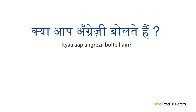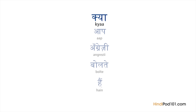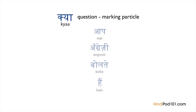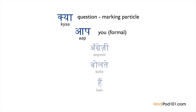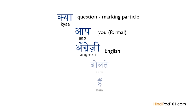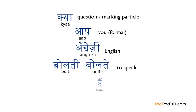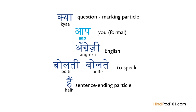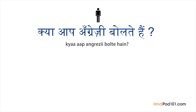Let's break down this sentence. Kya is the question marker which comes at the beginning of the sentence. Aap means you — this is the respectful word for you, used in formal situations. You should always use it with people you don't know or with elders. Angrezi means English. Bolte means to speak and is used when the subject is masculine; bolti is used when the subject is feminine. Hain is a sentence ending particle used with the formal you.